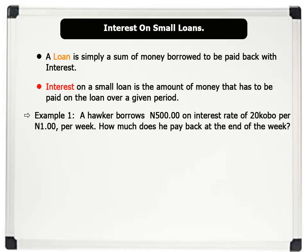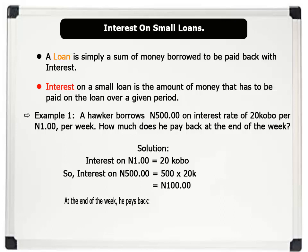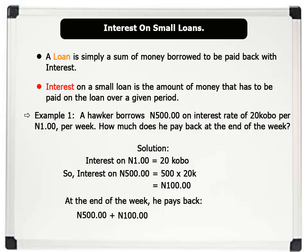A hawker borrows 500 Naira at an interest rate of 20 Naira per 1 Naira per week. How much does he pay back at the end of the week? Solution: Interest on 1 Naira is 20 Naira, so interest on 500 Naira is 500 times 20 Naira, which equals 100 Naira. Therefore, at the end of the week, he pays back 500 Naira plus 100 Naira interest, which equals 600 Naira.